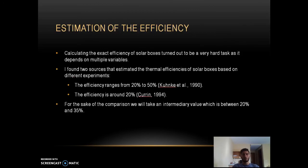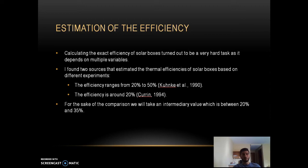To estimate the efficiency of the solar box cooker: calculating the exact efficiency is very difficult as it depends on multiple variables such as dimensions, heat gains, heat losses, and solar radiation. Two sources were found: the first estimated efficiency ranging from 20% to 50% depending on variables, and the second estimated around 20%. For comparison with the parabolic solar cooker, a value between 20% and 35% will be used.